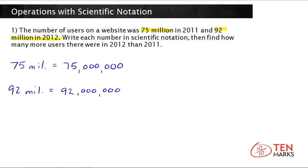To do that, remember that scientific notation has the form of a factor — I'll represent that with A — times the power of 10. And because these numbers are large numbers, you're going to use a positive power of 10. Let's start by finding the factor. For 75 million, you put a decimal point after the first non-zero digit in the number, which happens to be 7. So your factor is 7.5.